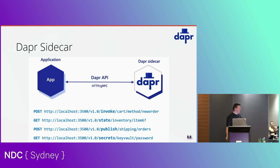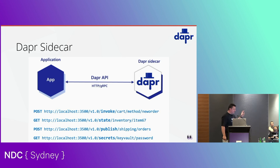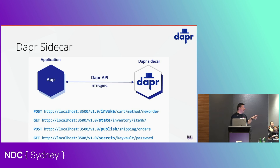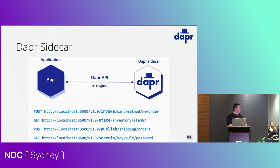Audience question: if you have five containers, would you have five sidecar installs? Yes. But if you have five instances of the same application, you have one sidecar — because the Dapr sidecar can load balance for you as well. That's one of the other features it can do. The sidecars themselves can scale out too. For real load balancing, use something like YARP or Envoy, which are far more advanced.